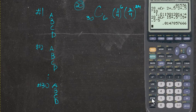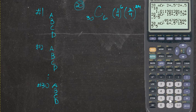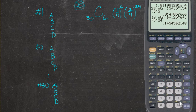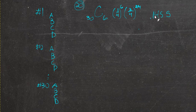Calculating that on the calculator gives about 0.1454 — so roughly a 14.5% chance of getting exactly 6 right when randomly guessing. That's actually a pretty reasonable probability.